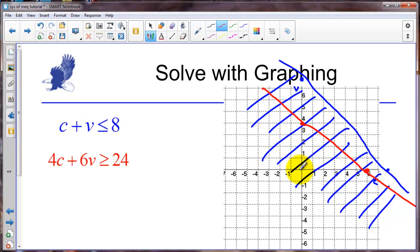Now this time if I put 0, 0 in as my test point. So if I use this as my test point again. We would have 0 greater than 24. That's false. So we are going to shade on this side of the line.